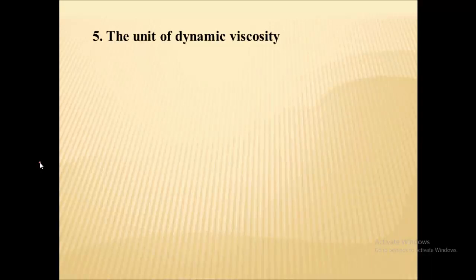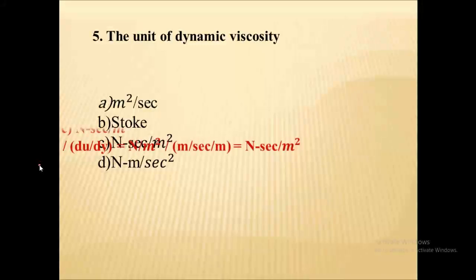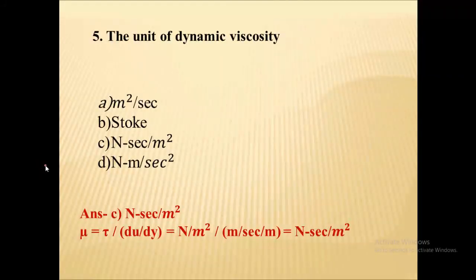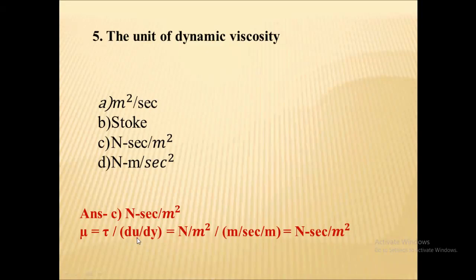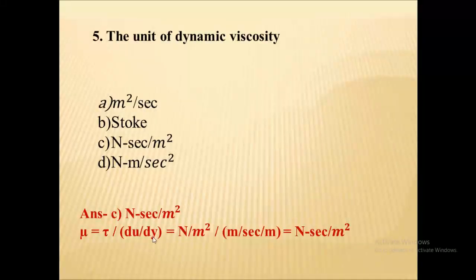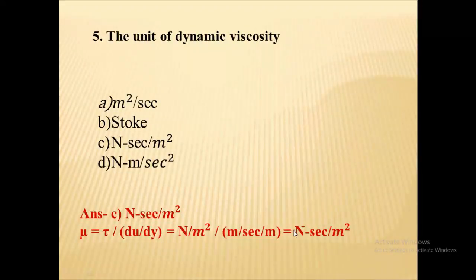The unit of dynamic viscosity is newton second per meter square. Dynamic viscosity equals shear stress upon rate of shear strain. Shear stress unit is newton per square meter; rate of shear strain is change in velocity with respect to change in distance, so meter per second divided by meter. After solving, you get newton second per square meter as the unit of dynamic viscosity.